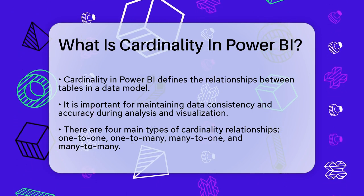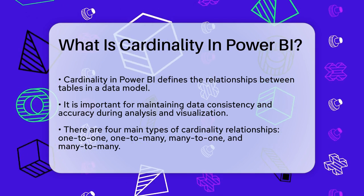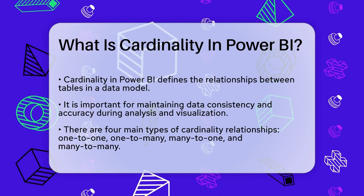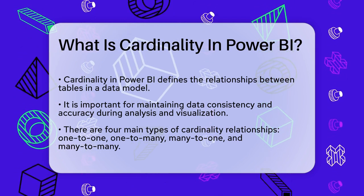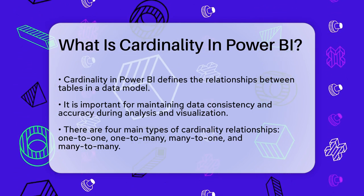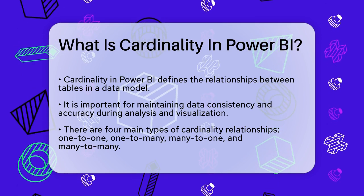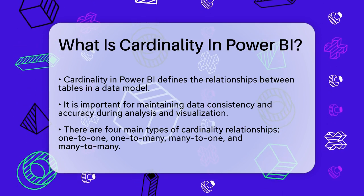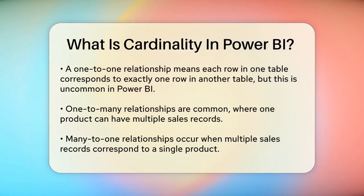Let's start with the one-to-one relationship. This means that each row in one table corresponds to exactly one row in the other table. However, this type is not very common in Power BI because it can lead to redundant data and make your model less efficient.